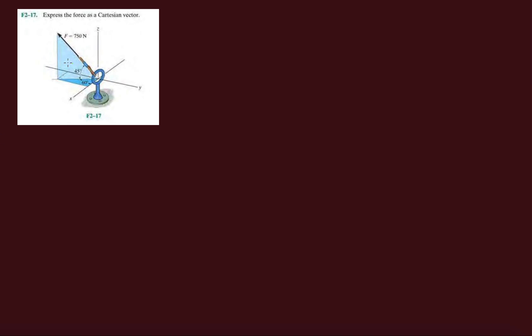Alright, so we're going to be expressing this force, this 750 Newton force, as a Cartesian vector. So again, we have to dissect this. We have to look at this light blue plane making that 45 degree angle. So we know that this is what we've been calling our Fxy because it lies on the xy plane, plus our Fz because it's parallel to the z axis.